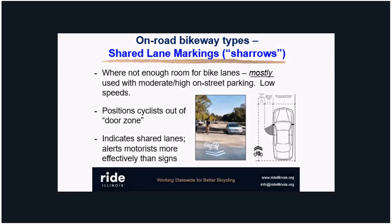Sharrows can serve as a fallback position where you don't have the pavement width, but a shared lane marking road shouldn't persist for a long time — you should try to find something better. One good use is at intersections where bike lanes need to drop temporarily due to a turn lane. The road might be wide enough for bike lanes between intersections, but suddenly there are three lanes and no room, so shared lane markings can get cyclists through that intersection.